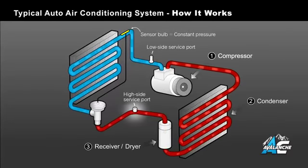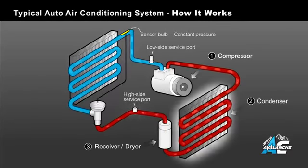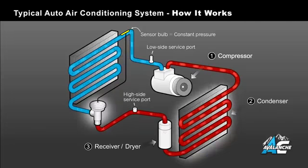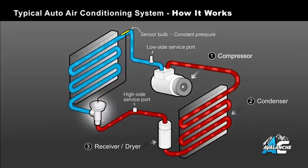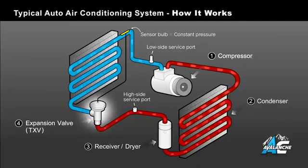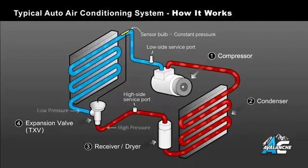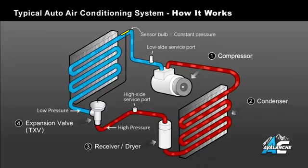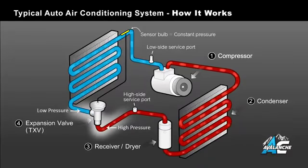The high side service port is located here between the condenser and the expansion valve or orifice tube. Next, this high pressure liquid passes through the expansion valve, allowing it to expand and turn into a low pressure liquid, as indicated by the color change from red to blue.